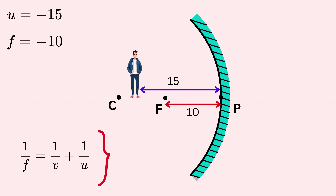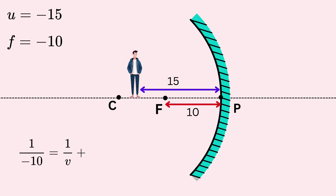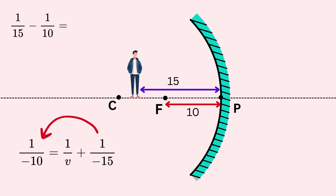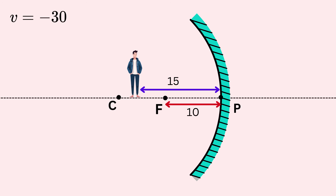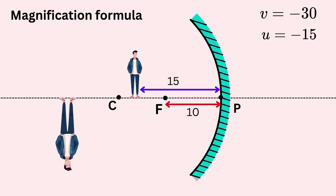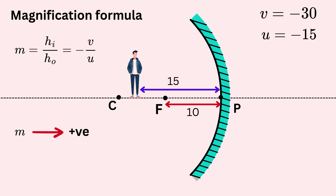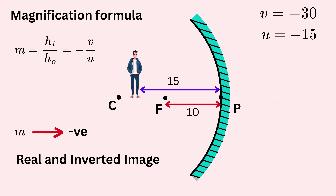Using the mirror formula, we substitute: 1/(−10) = 1/v + 1/(−15). Moving 1/(−15) to the left: 1/(−10) − 1/(−15) = 1/v, giving −1/30, so v = −30 cm. Since v is negative, the image is formed on the same side as the object, meaning it is a real image located 30 cm in front of the mirror. For magnification: m = height of image / height of object = −v/u. If m is positive, the image is virtual and erect; if negative, it is real and inverted.